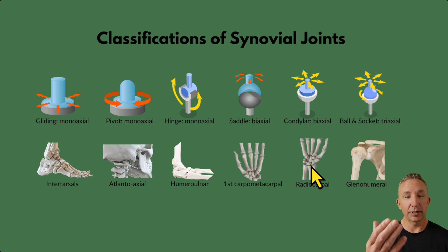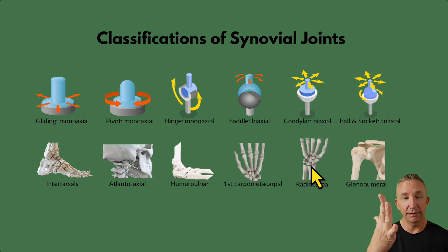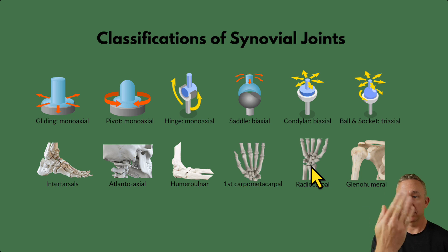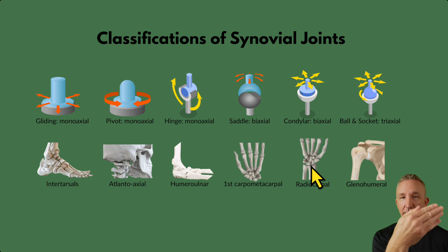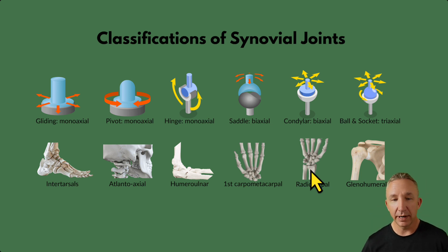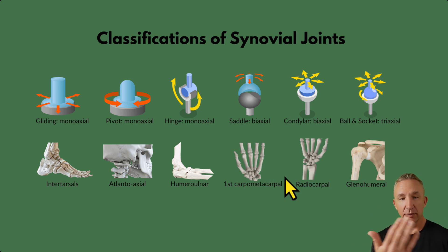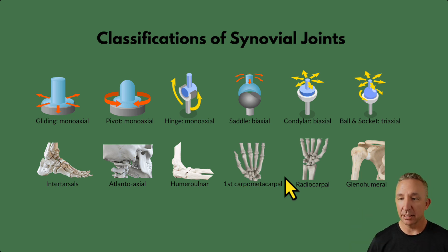The condylar joint allows bending and straightening of the fingers — that's one movement. The second movement is side to side, so you can expand your fingers and move them in a lateral or medial direction. This is a biaxial joint.